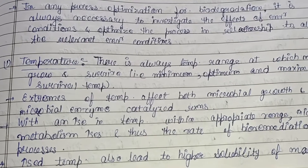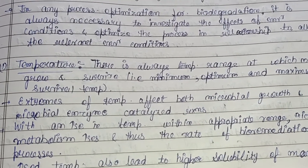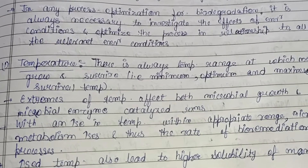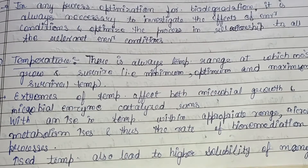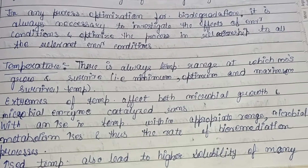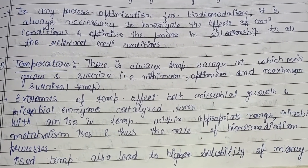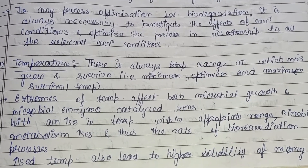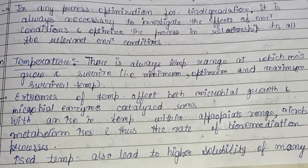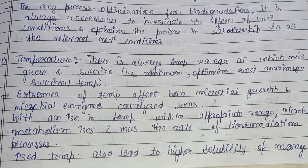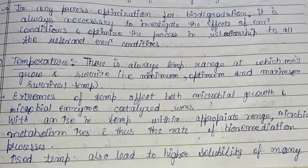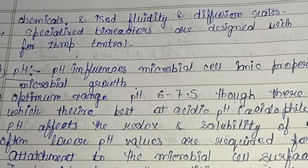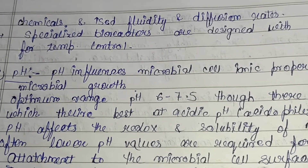Very high or maximum temperatures can negatively affect these properties. With an increase in temperature within the appropriate range, microbial metabolism also increases — due to the increase in temperature, the process of metabolism in a particular microbe increases, and thus the rate of bioremediation also increases. Increased temperature also leads to higher solubility of many chemicals and increased fluidity and diffusion rate.